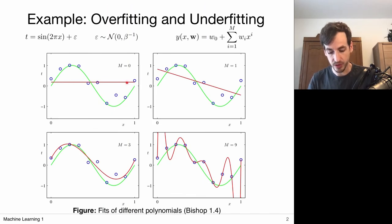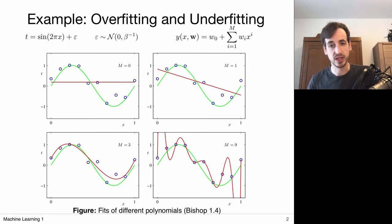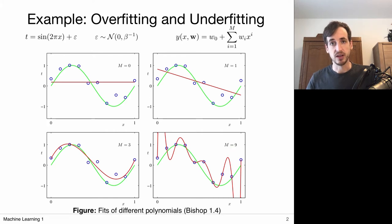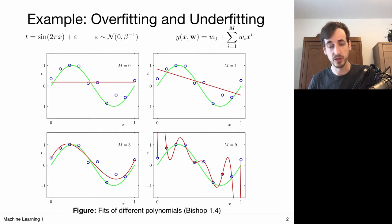We have control over the model complexity by changing the order. If I have a very low order model or a very simple basis, I cannot produce very complex functions. If I increase the number of basis functions, let's say to M=3, I have a more flexible model that can nicely represent my data. And if I go to a very high order, let's say M=9, I have a very complex model that can fit all sorts of functions, including this very noisy function which goes precisely to the data. The M=9 case should also be capable of fitting the M=3 case, because polynomials up to x³ are included in that set.